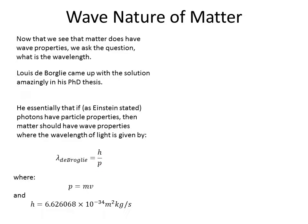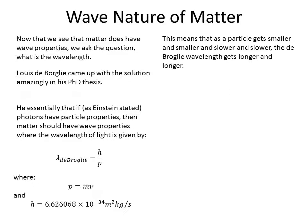We know from previous studies that momentum is nothing more than mass times velocity. Maybe if we're dealing with relativity we need some corrections, but for low speeds, momentum is just mv. Planck's constant h is 6.626 times 10 to the negative 34 meters squared kilograms per second. So it's a very simple formula. The larger the mass and the larger the velocity, the larger the momentum — and the larger the momentum, the smaller the wavelength.